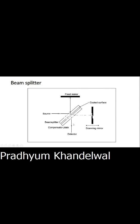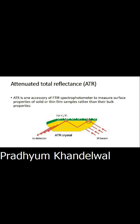This is a beam splitter, as seen in the Michelson interferometer — here is a close look at how it looks. Now we are talking about Attenuated Total Reflectance (ATR). It is an accessory of the FTIR spectrometer used to measure the surface properties of solid or thin film samples rather than bulk properties.